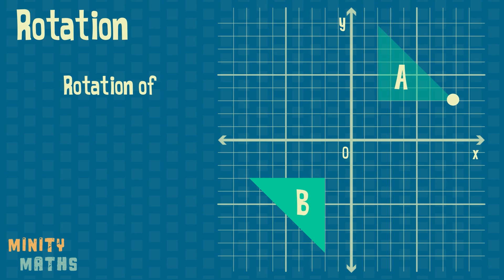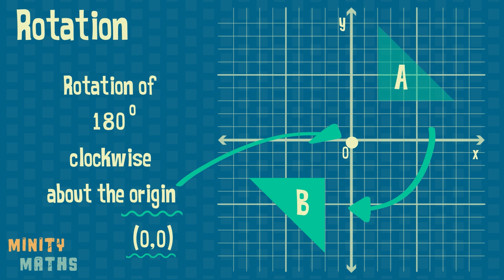The angle of rotation, the direction, and finally the center of rotation. This is the point that the shape has been rotated around. You may find tracing paper helps with finding the center of rotation.